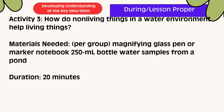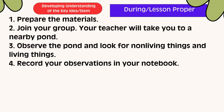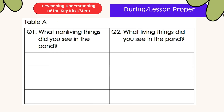Activity 3: Here are the materials that you're going to need per group — magnifying glass, pen or marker, notebook, and a 250 ml bottle of water samples from a pond. Prepare the materials. Join your group where your teacher will take you to a nearby pond. Observe the pond and look for non-living things and living things. Record your observation in your notebook. Here is Table A.